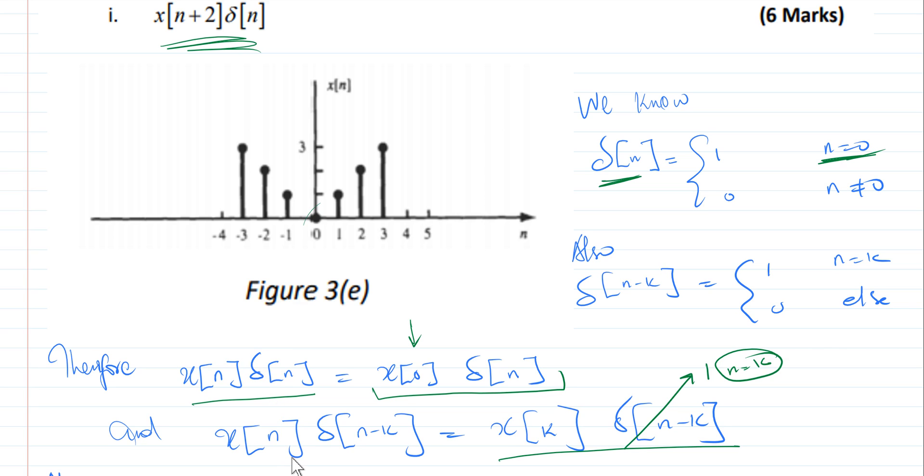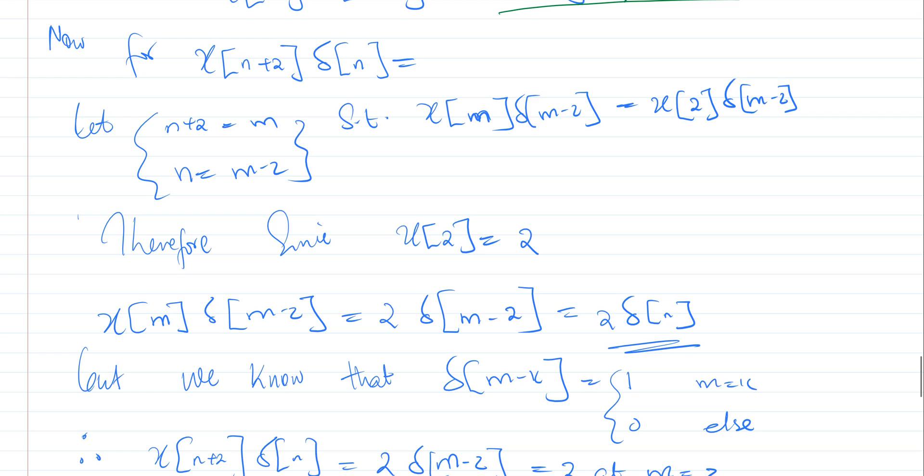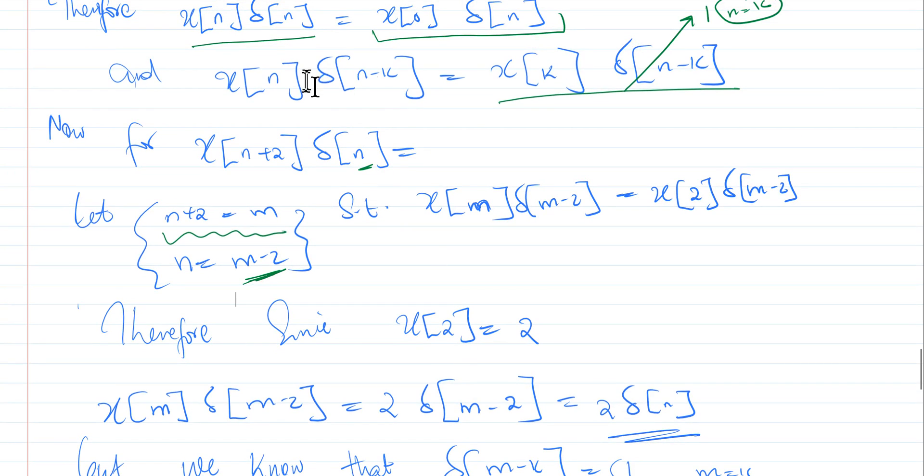And what we now see is the following, that now we have this equation x of n plus 2 multiplied by delta of n. We can just do a very simple manipulation where we say, let n plus 2 be equals to m. And therefore our n will be equals to m minus 2, which we just want to replace to be the form that is in this equation here, so that we can now be able to express it in this form.